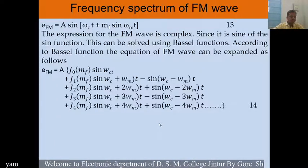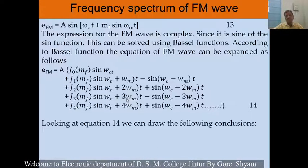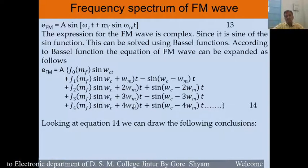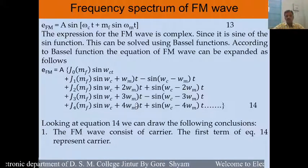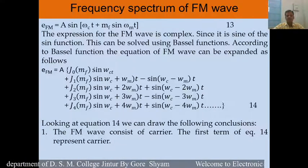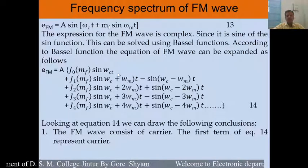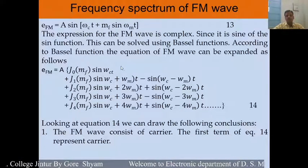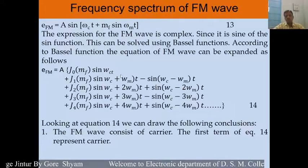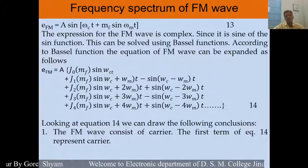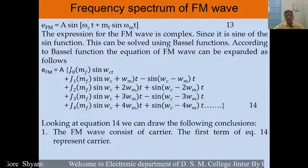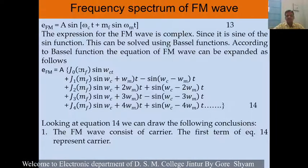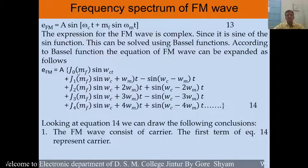From this equation, we can draw some conclusions. The FM wave consists of a carrier component. Looking at this equation, the term J0(Mf)·sin(ωc·t) — here the frequency is ωc, which is the frequency of the carrier. Therefore, this term is the equation for the carrier, and after frequency modulation, the signal contains the carrier component.